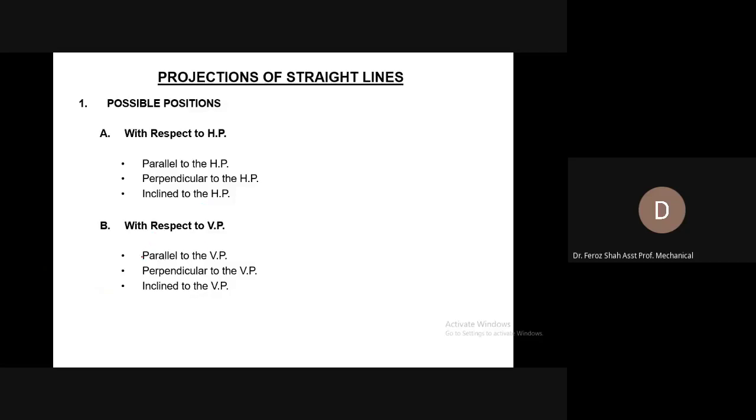With respect to the vertical plane, the line can have these positions: parallel to the vertical plane, perpendicular to the vertical plane, and inclined to the vertical plane.